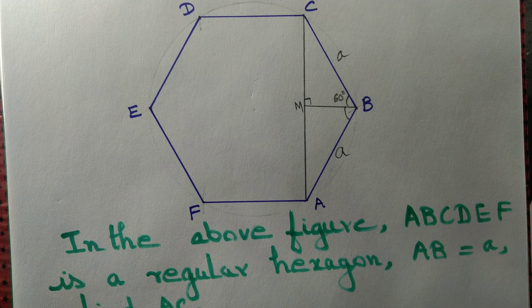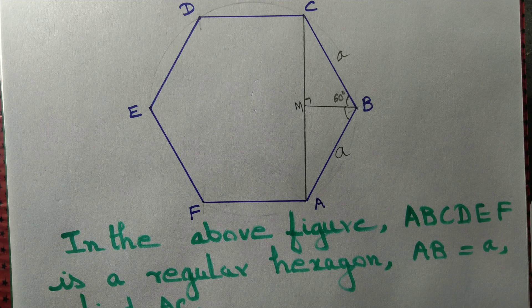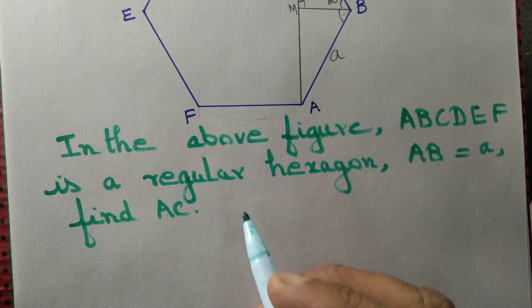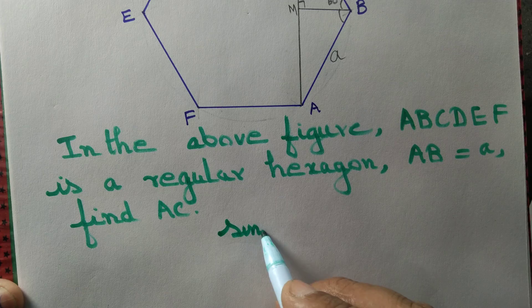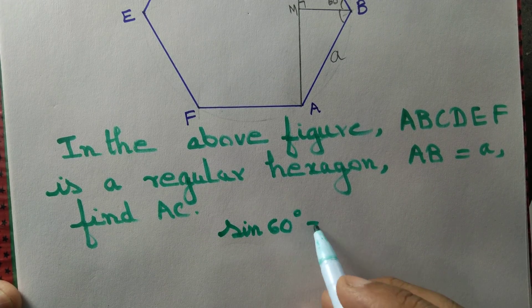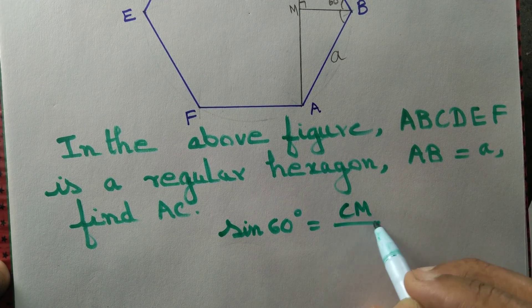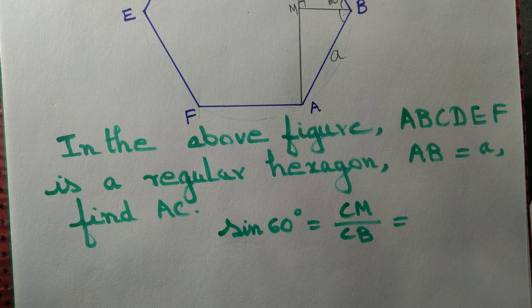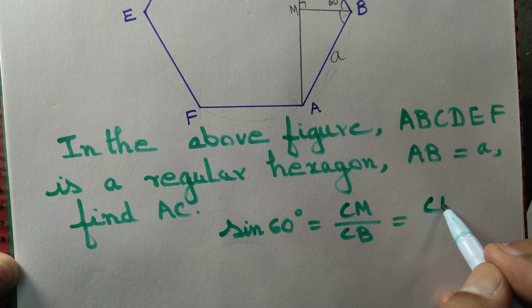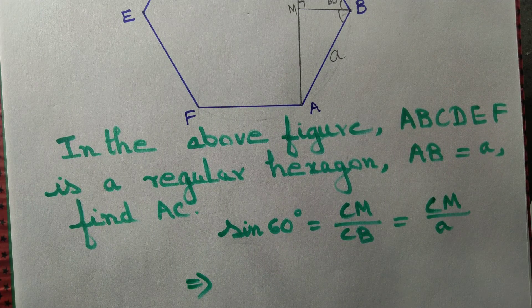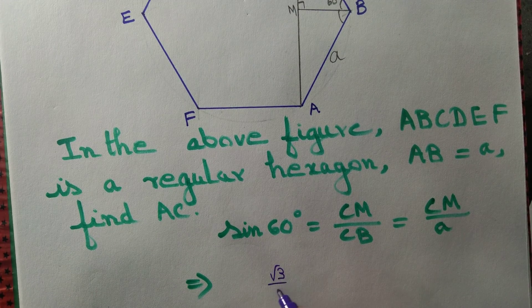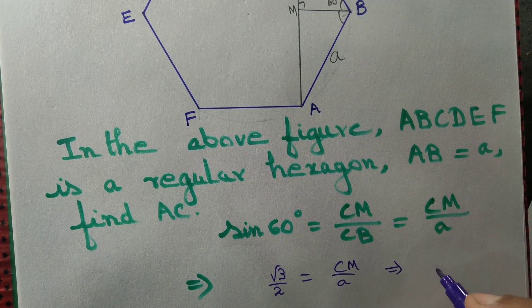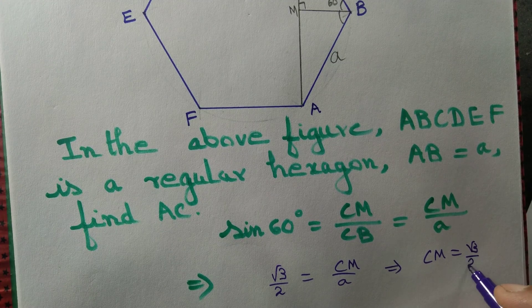Therefore, we apply trigonometry: sin 60 degree equal to CM by CB, opposite side by hypotenuse. CM we want to find it, CB is A. We know that sin 60 degree equal to root 3 by 2, that equal to CM by A. That implies CM equal to root 3 by 2 A.